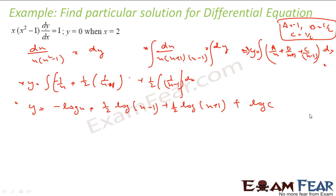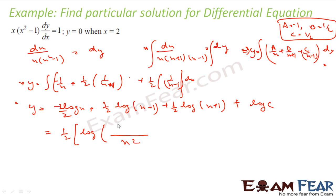Since everything is a log term I can write the constant as log(c). Taking (1/2) common and multiplying through, this becomes y = (1/2)·log[(x−1)(x+1) / x²·c²], which simplifies to y = (1/2)·log[(x²−1) / (x²·c²)].